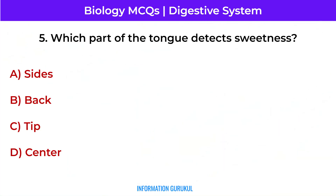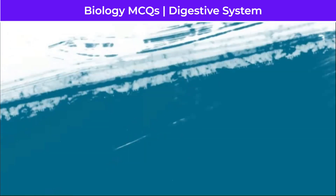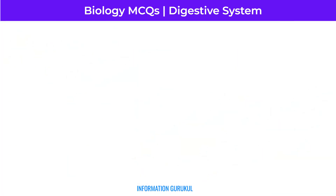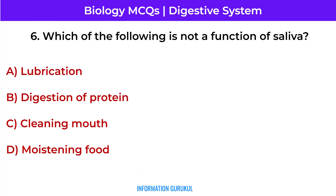Which part of the tongue detects sweetness? The tip. Which of the following is not a function of saliva? Digestion of protein.